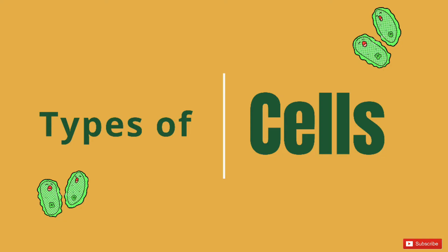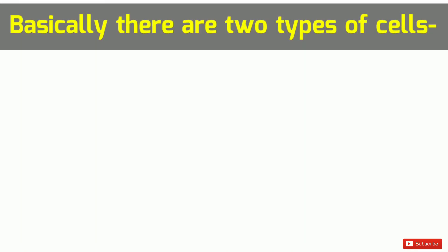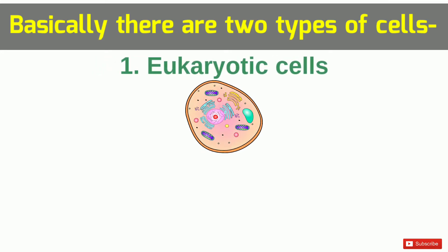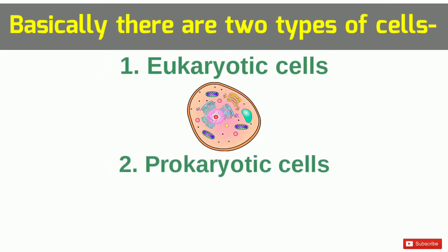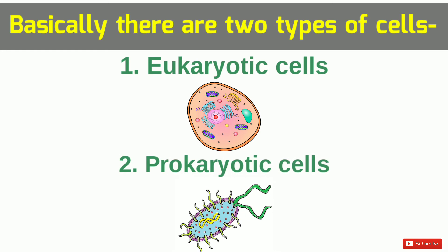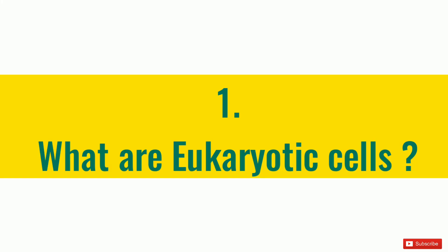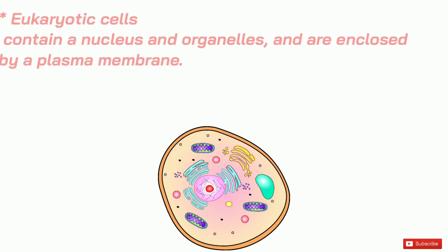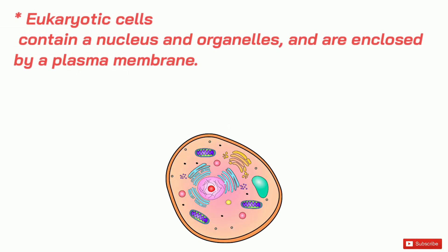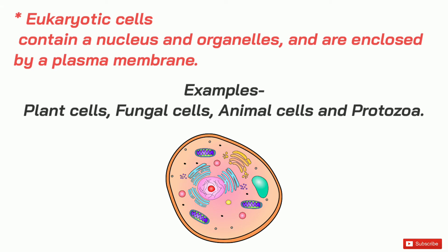Now let's see types of cells. In living organisms, basically there are two types of cells found. First, eukaryotic cells and second, prokaryotic cells. Eukaryotic cells contain a nucleus and organelles and are enclosed by a plasma membrane. For example, plant cells, fungal cells, animal cells and protozoa.